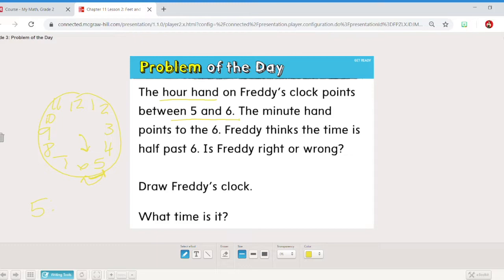Now the minute hand points to the six. We know if our minute hand points to the six that's our half hour mark which is 30 minutes. So it looks like it is half past five. Freddy thinks the time is half past six. Half past six would be 6:30. Is he right or wrong? Well it looks like we did part one of this question already. We drew his clock and we see that it is 5:30. Freddy is wrong.